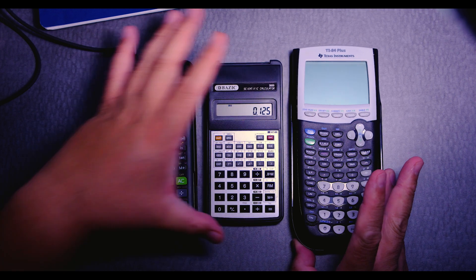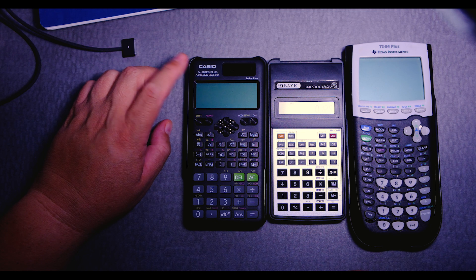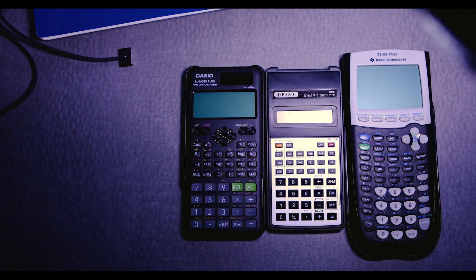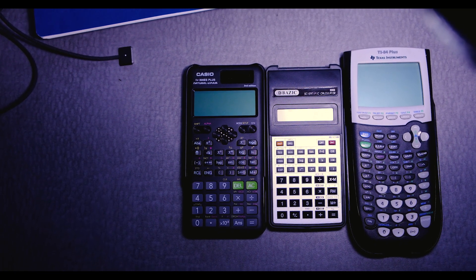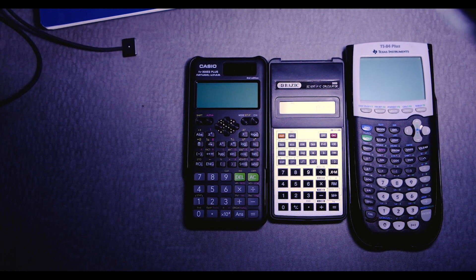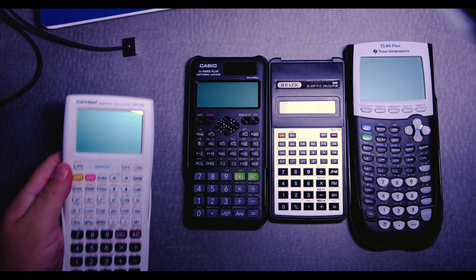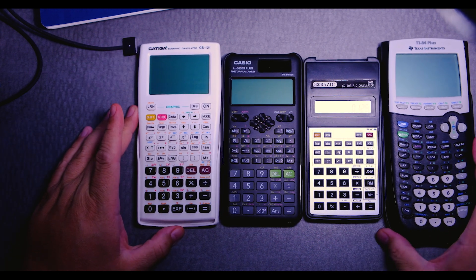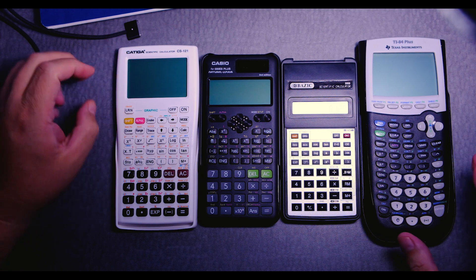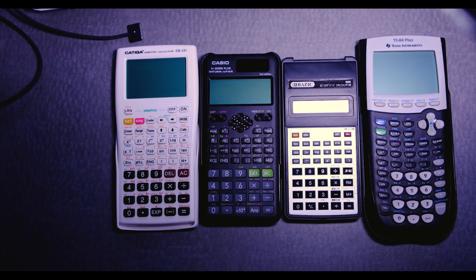This one's the, this one's the Walgreens one. The FX-300ES. Much more functions. The one I got from Amazon is this one, right? This one's the Katiga, or Katiga CS-121. And, what I'm looking for, uh-huh, this one.